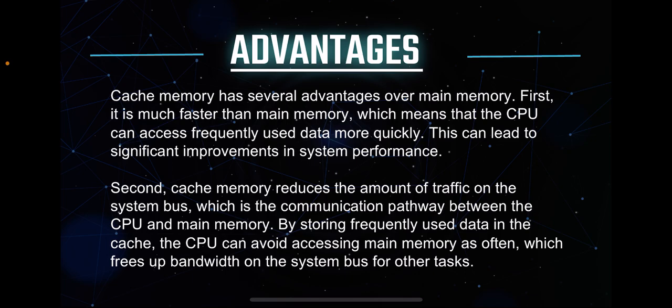Cache memory has several advantages over main memory. First, it is much faster than main memory, which means the CPU can access frequently used data more quickly, leading to significant improvements in system performance. Second, cache memory reduces the amount of traffic on the system bus — the communication pathway between the CPU and main memory. By storing frequently used data in the cache, the CPU can avoid accessing main memory as often, freeing up bandwidth on the system bus for other tasks.